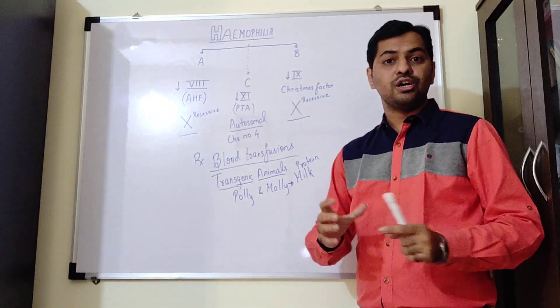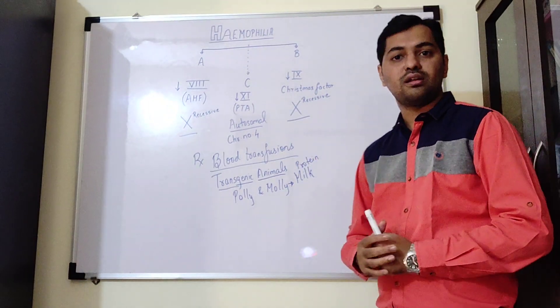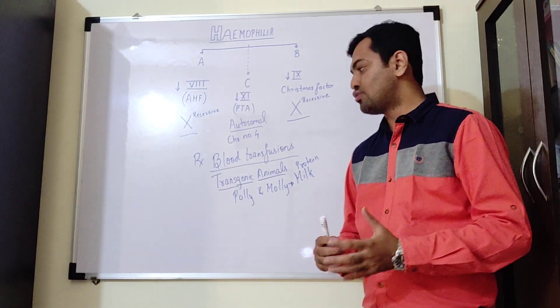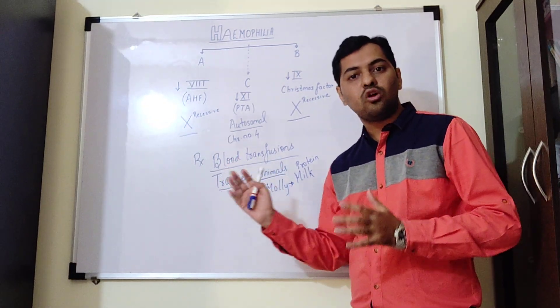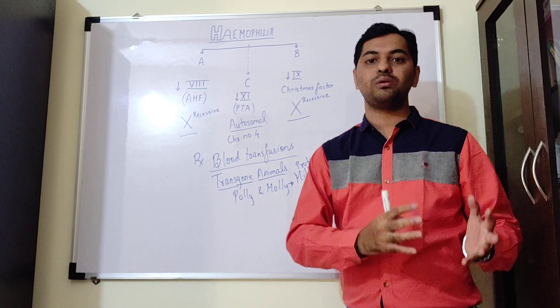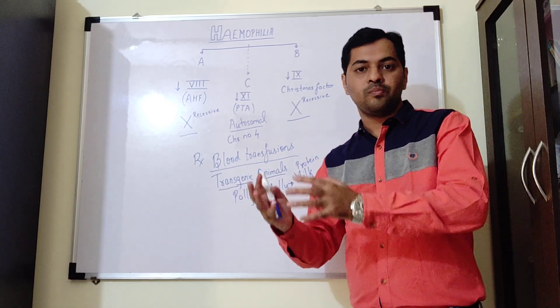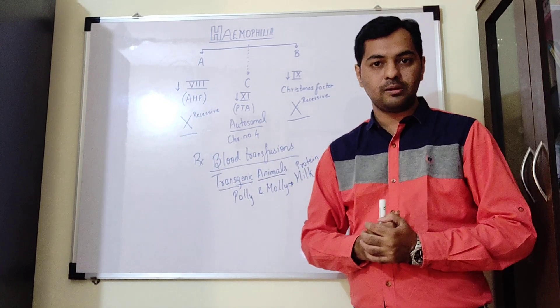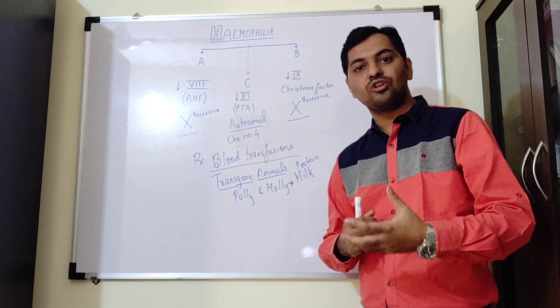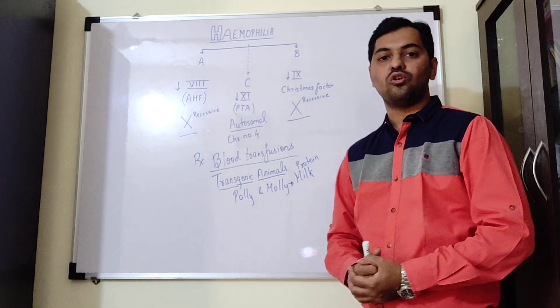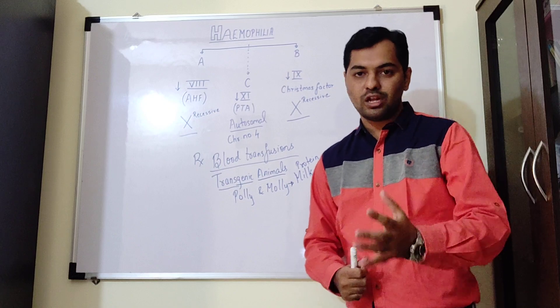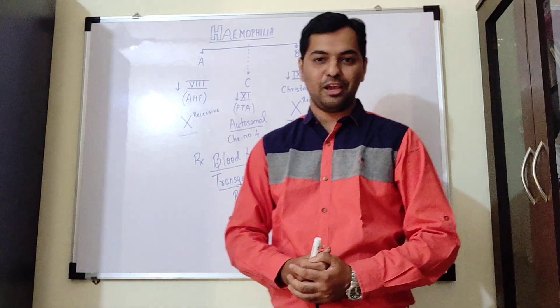Thus, it is a cheaper mode of production of this clotting factor 9. Since when we perform blood transfusion, there are also high risks of disease being transferred from the patient to the recipient, it is an extremely useful method wherein the transgenic concept can be used. That's all from this side, thank you.